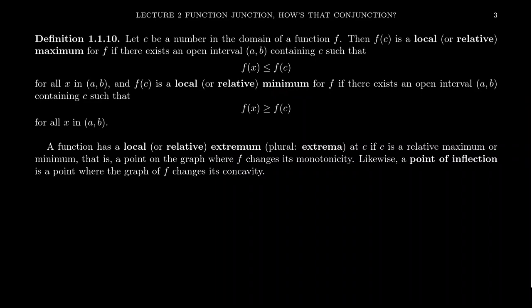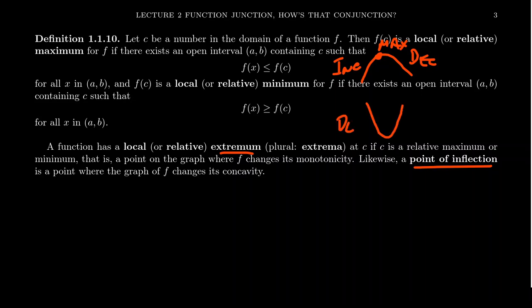Closely related to the idea of an extremum is the idea of a point of inflection. At an extremum, the function changes its monotonic behavior — a maximum is where the graph switches from increasing to decreasing, and a minimum is where the function switches from decreasing to increasing. Similarly, an inflection point — sometimes called a point of inflection — is a place on a graph where the function changes its concavity.